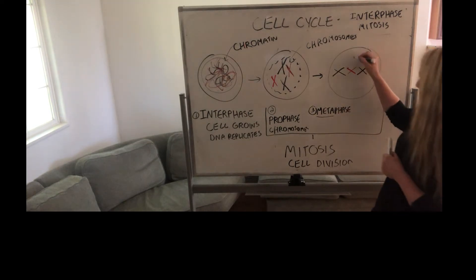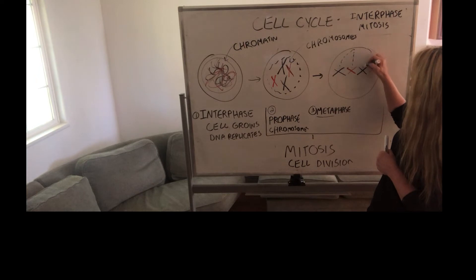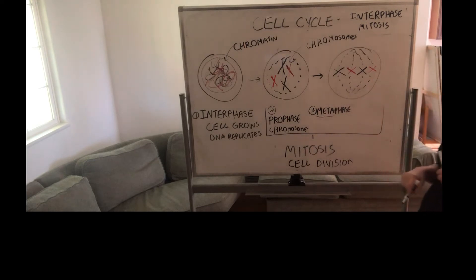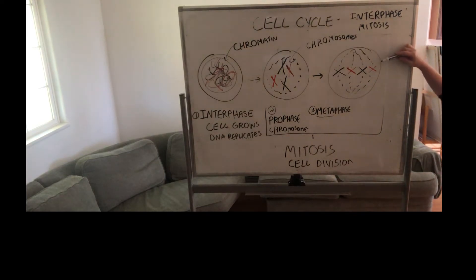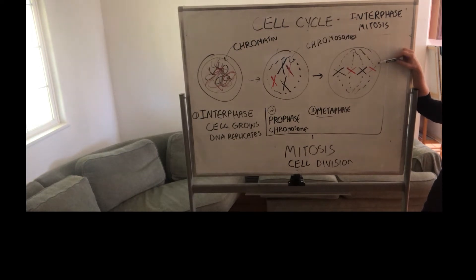So metaphase—these are lined up, and there's these structures called spindle fibers that are going to connect to these chromosomes, and they're the things that are actually going to pull the chromosomes apart at the middle of the cell. So these are the first three phases of the cell cycle. The next phase then is going to be where these chromosomes start to be separated.